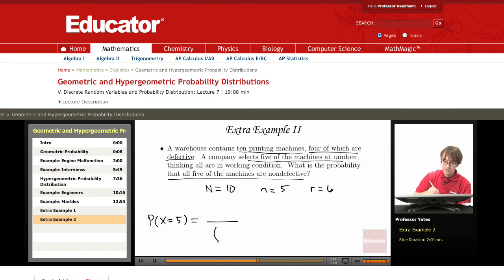So in the denominator here we have ten choose five. Here we have six choose five times four that are defective and we don't want any of those.